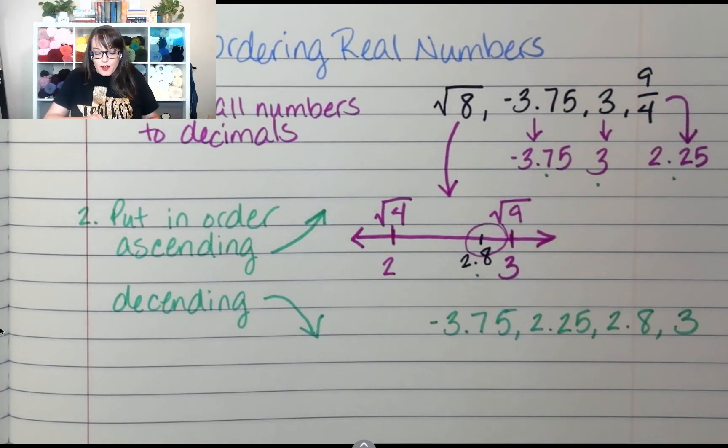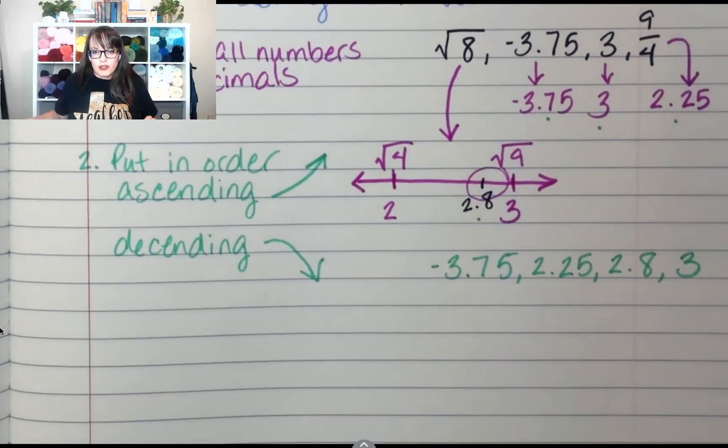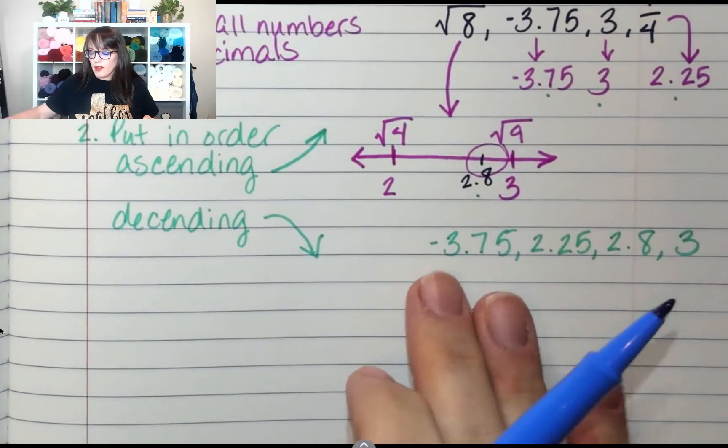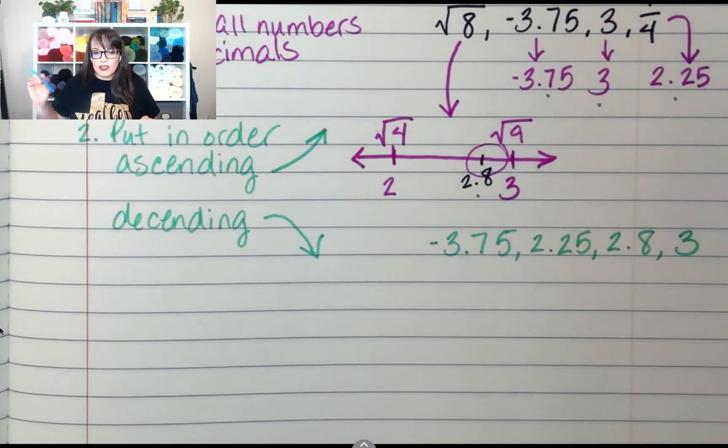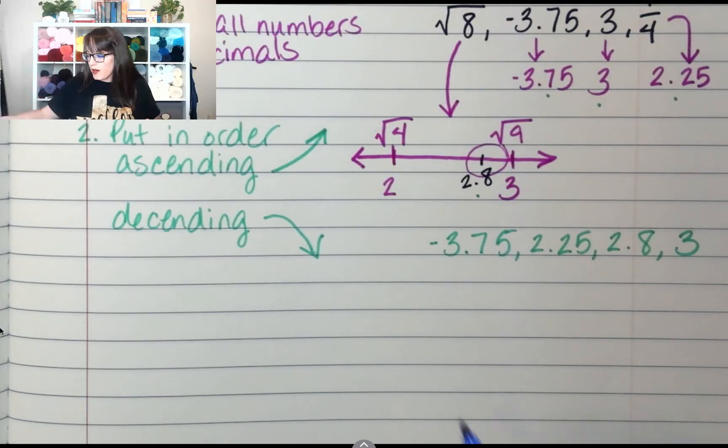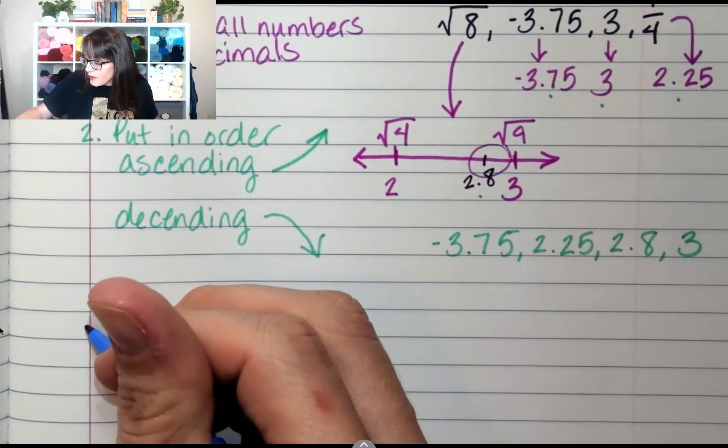Not bad, right? Then the last thing I want to do is put them back in their original form, because the questions are not going to have them in decimal form. So you need to make sure that you put them back in the form that they were in the beginning. So step three: revert back to original form.